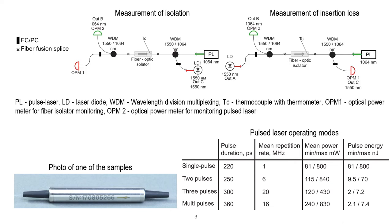The isolation coefficient and insertion loss of tested samples were monitored using a laser diode with a wavelength of 1550 nm and average power of 10.50 mW. In addition, the sample's temperature was monitored using a thermocouple placed on the surface of the isolator.